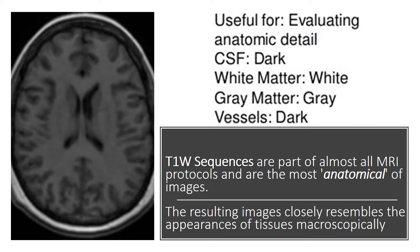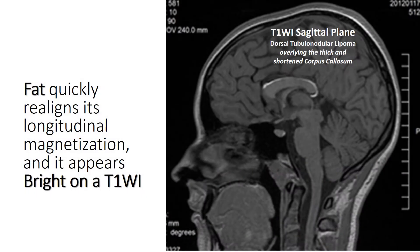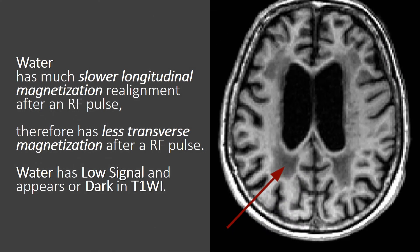The resulting images closely resemble the appearances of tissues macroscopically. Fat quickly realigns its longitudinal magnetization and appears bright on a T1 weighted image. Conversely, water has much slower longitudinal magnetization realignment after an RF pulse, and therefore has less transverse magnetization after an RF pulse.